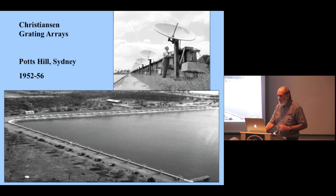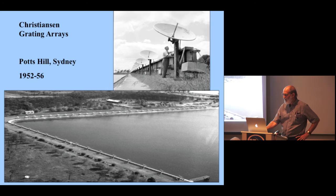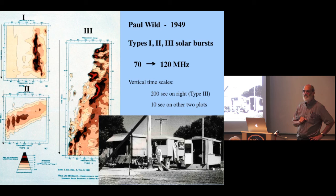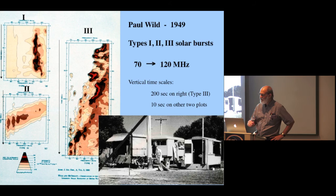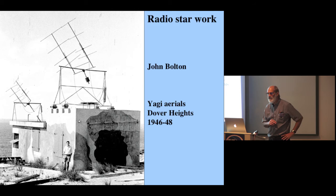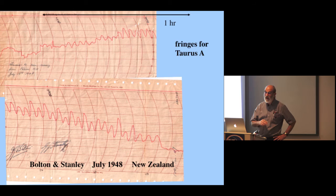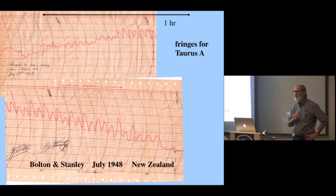Ruby Payne Scott—the first woman to make substantial contributions to radio astronomy, the subject of a lovely biography by Miller. John Bolton likewise used the sea cliff interferometer to discover radio sources, measure angular sizes, and get reasonably good positions. He and Stanley went to New Zealand to get different cliff heights and orientations, and here are the actual strip chart fringes they published.